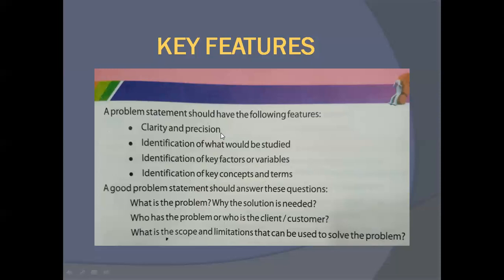Let's revise: first, clarity and precision — the problem statement should be clear and accurate. Second, identification of what would be studied — what needs to be done in the problem. Third, identification of key factors and variables — the factors present and the variables whose values change. Fourth, identification of key concepts and terms — the important terms that help us find the solution.